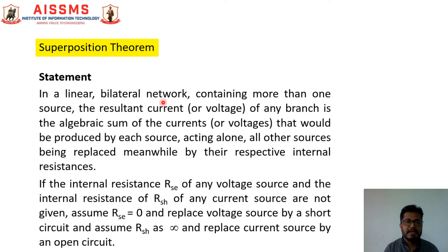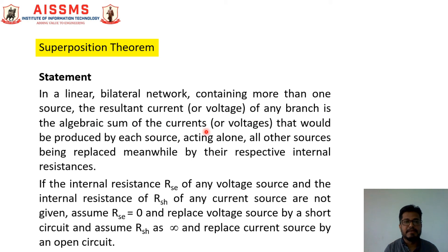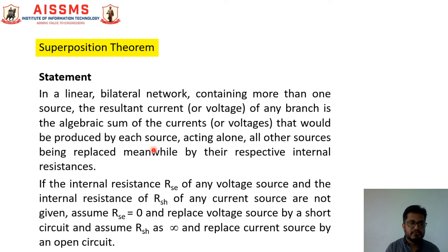In a linear bilateral network containing more than one source, the resultant current or voltage of any branch is the algebraic sum of the currents or voltages that would be produced by each source acting alone, all other sources being replaced meanwhile by their respective internal resistances.